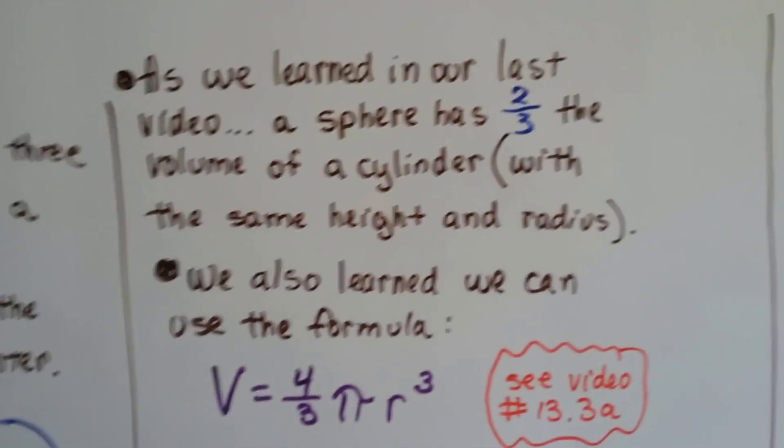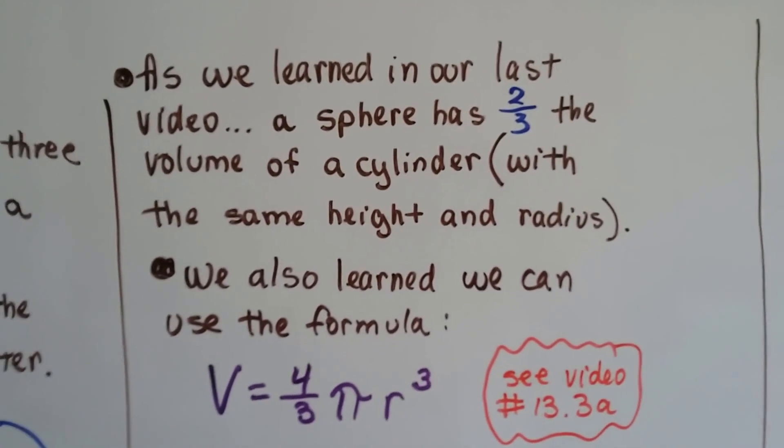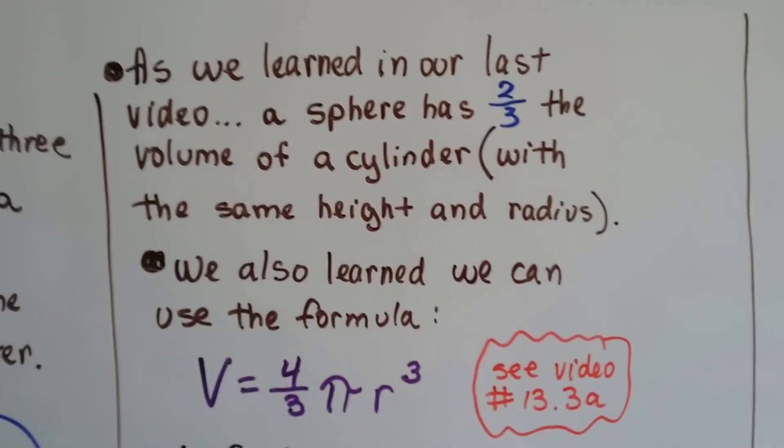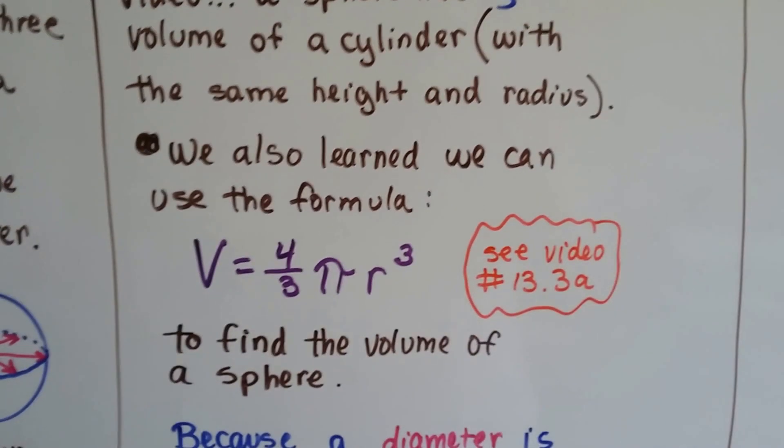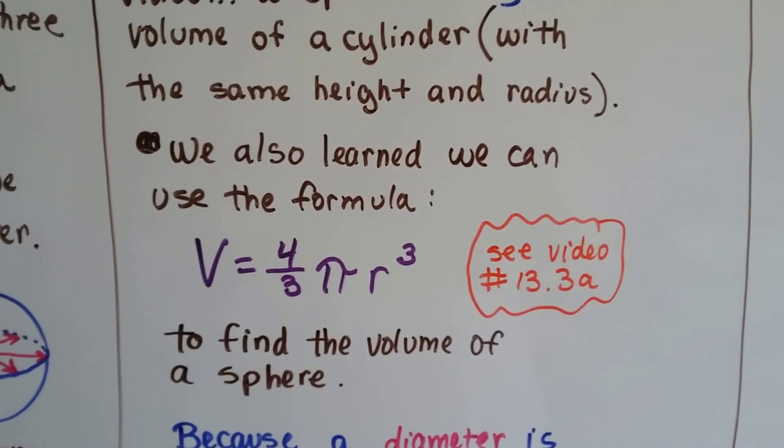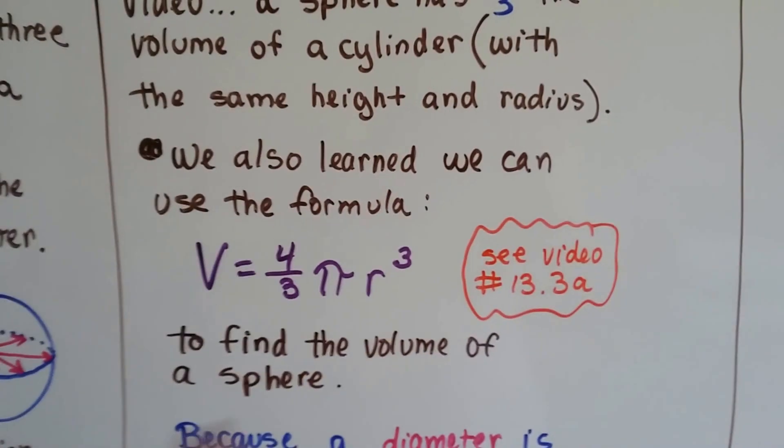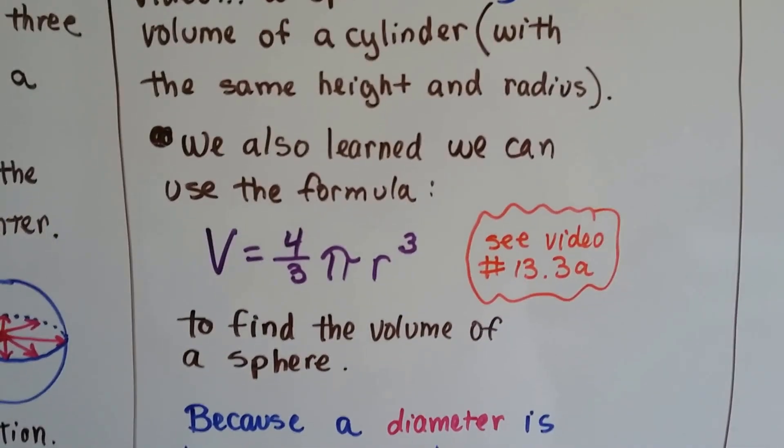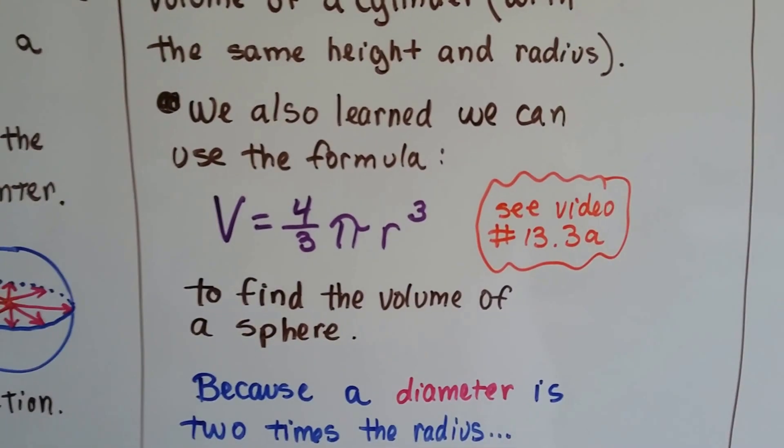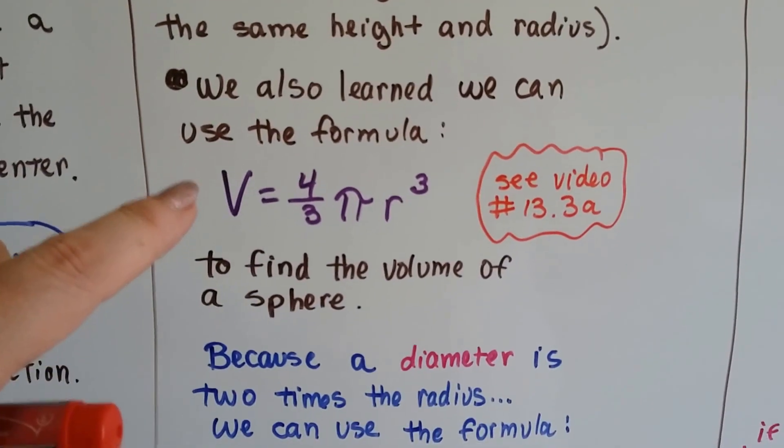Well, as we learned in our last video, a sphere has two-thirds the volume of a cylinder with the same height and radius. We also learned that we can use the formula V equals four-thirds pi r cubed. Now, if you didn't see the last video, it was 13.3a, and there's a link to it in the description of the video you're watching now. We use this to find the volume of a sphere.